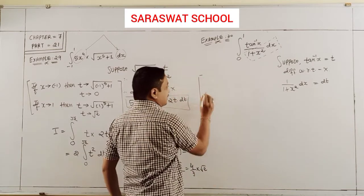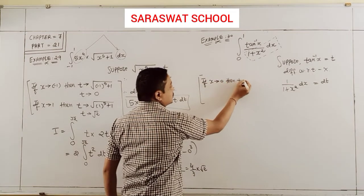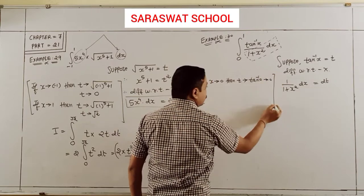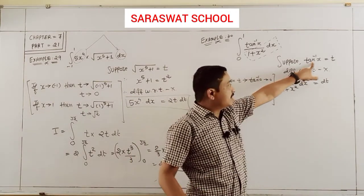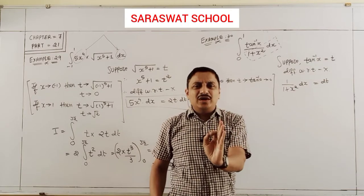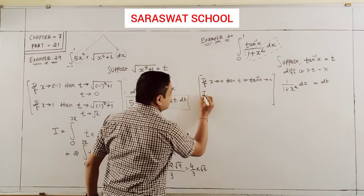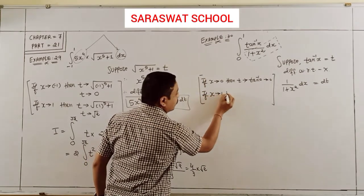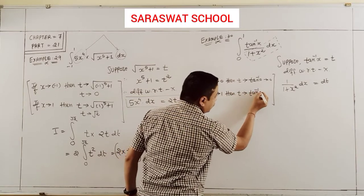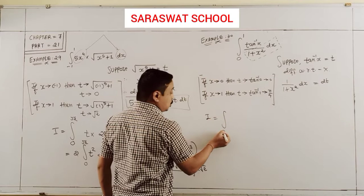I change my limits. If x tends to 0, t tends to tan⁻¹(0), which is 0. Always you change your limits in your substitution. If x tends to 1, t tends to tan⁻¹(1), which is π/4. So my integration is now from 0 to π/4.